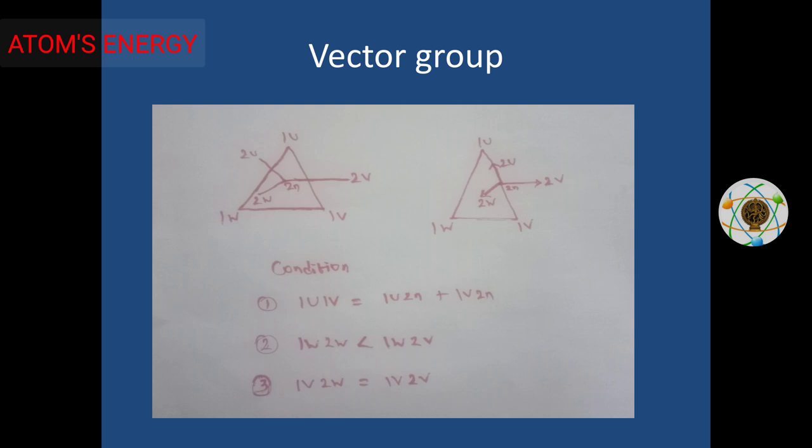If you change the vector group, the conditions change. That is how you form the vector group — you can search the network for vector group references. DYN11 is a bit simpler. What is tan delta? We use tan delta with test values. If you test the IR value, there is a 10 delta point you can check. The transformer phase has capacitors — with the capacitors, that is the tan delta test connection.